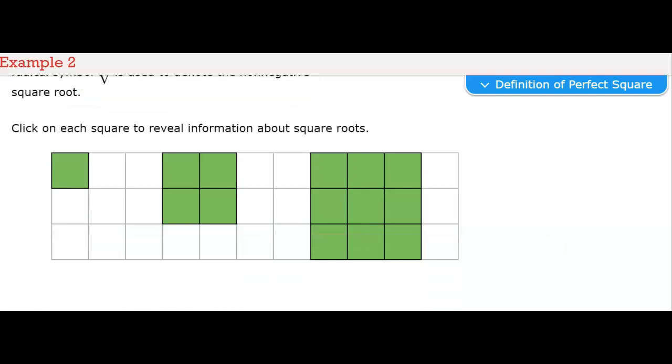Click on each square to reveal the information about the square root. So this would be 1 times 1 equals 1. So the square root of 1 is 1. Then we have 2 times 2 equals 4. The square root of 4 equals 2. Then we have 3 times 3. And the square root of 9, which is the total number of squares, equals 3.